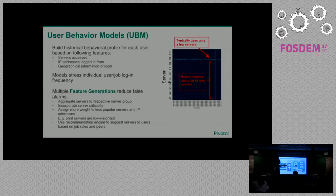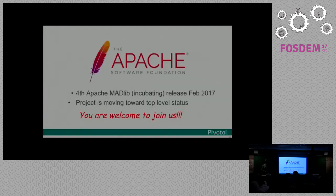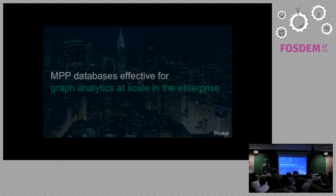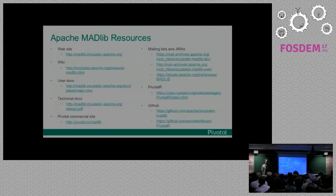All of these models can be combined and then given a score by user. Apache Madlib is on its fourth release moving towards top-level status, and anyone is welcome to join us on this project. The thought I want to leave you with is: MPP databases can be effective for solving a certain class of graph analytics problems at scale. Thank you for your attention.